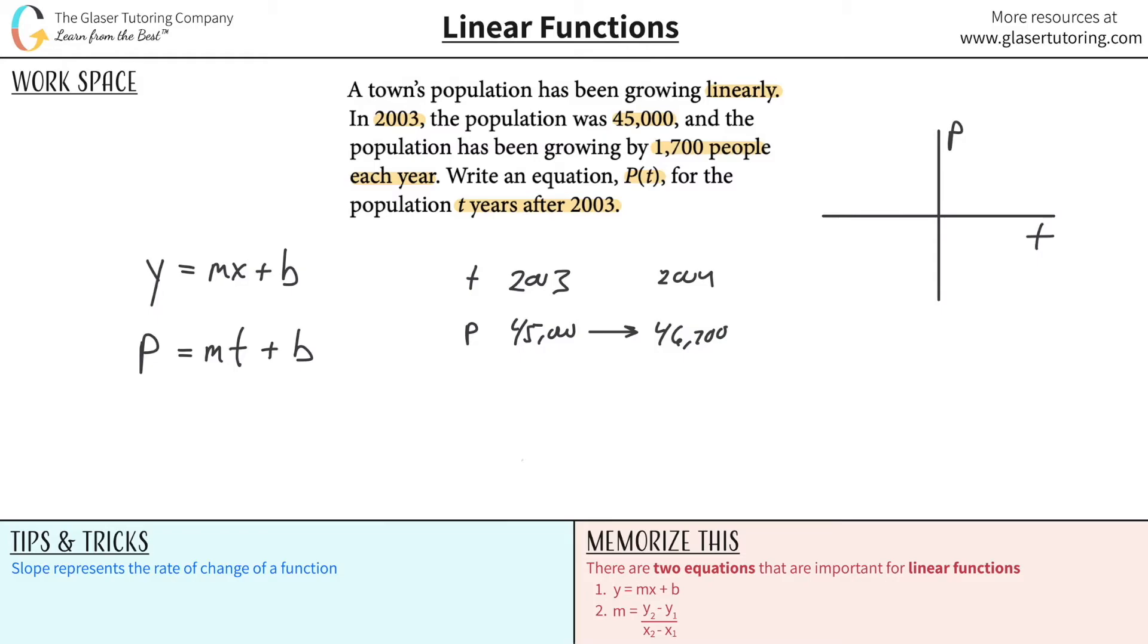From knowing this information, can't we find the slope? Sure, you might say I got two points, I can find the slope. But it's even easier than that. This 1,700 people each year - the population is growing by 1,700 people each year - that is the rate of change. That is the slope, that is m.